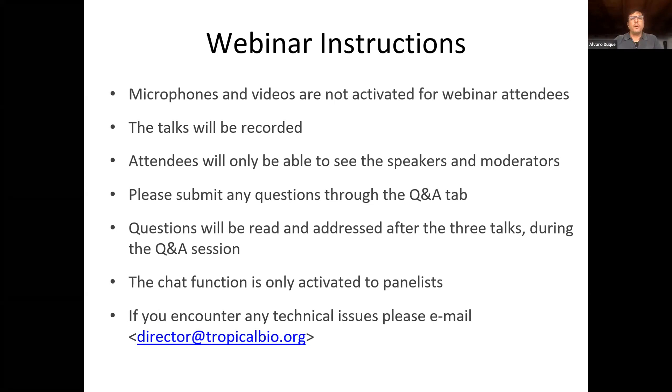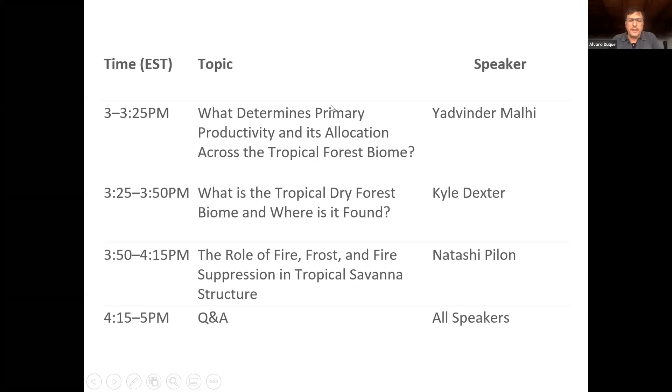Our first speaker is Yadvinder Malhi. Yadvinder Malhi is Professor of Ecosystem Science at the University of Oxford and Director of the Oxford Centre for Tropical Forest. His research focuses on the function of tropical forest and savanna ecosystems, how they vary across regions, and how they change under the pressures of local and global change. In particular, he founded the Global Ecosystem Monitoring GEM network, which measures the carbon and biogeochemical cycles of tropical forests at sites spanning the tropics and relates this to biogeography, climate, soils, and trends. More broadly, he is interested in everything about the biosphere and the tropical biosphere in particular. He is a fellow of the Royal Society and past president of the ATVC. Yadvinder Malhi, we are delighted to have you here, and there is a very big audience waiting for you.